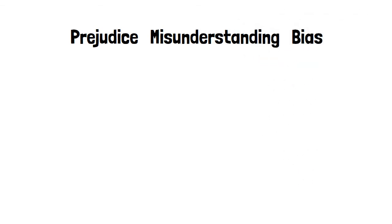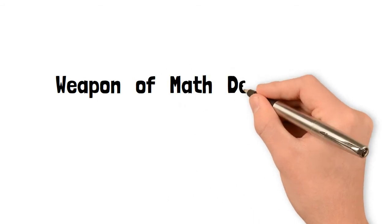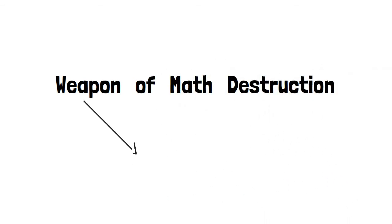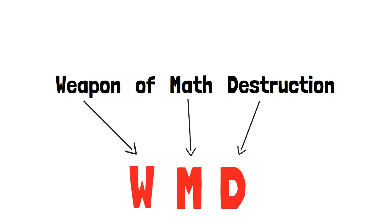To describe and classify these models in a simple but exhaustive way, Cathy uses a specific term, Weapon of Math Destruction, or WMD in short. Throughout several examples, from teacher evaluation to sentencing scoring systems, she focuses on three elements that recurrently affect the potential positive impact of WMDs.